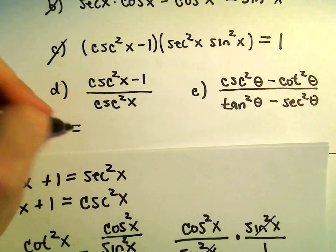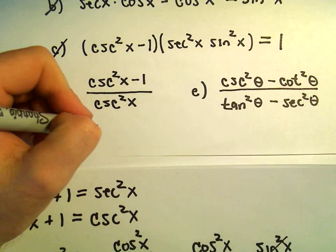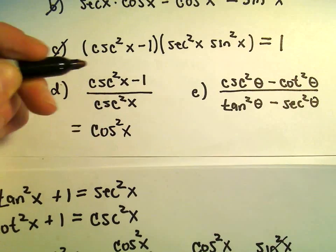Alright, so part d, I would say that reduces simply to cosine squared x.